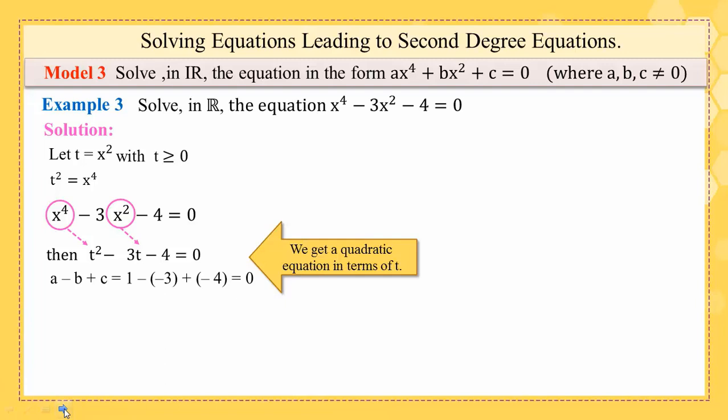Excellent! You notice that a - b + c, here 1 - (-3) + (-4) = 0, so you can find the roots directly. So t1 = -1 and t2 = -c/a = 4/1 = 4. Do not forget that this equation is in terms of t, so the solutions are t1 and t2, not x1 and x2.